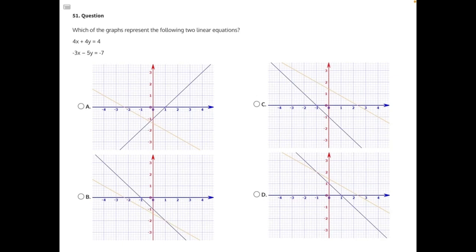Which of the graphs represent the following two linear equations? Let's start by putting these linear equations into slope-intercept form, which looks like y equals mx plus b, where m is equal to our slope, and b is equal to our y-intercept.